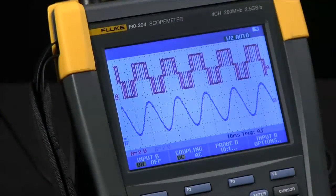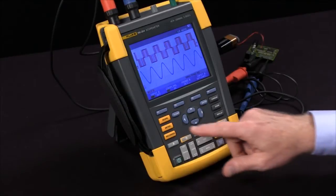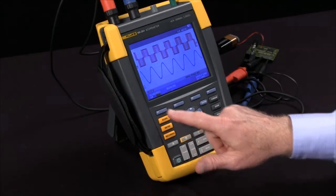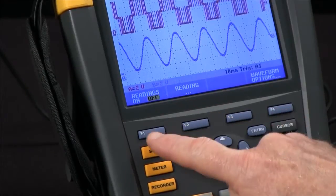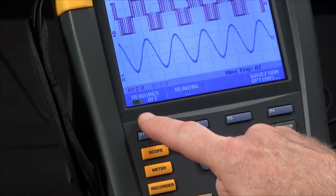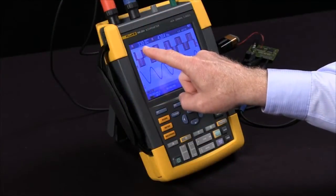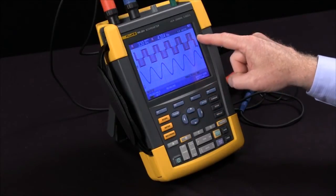The next thing I want to do is to make some measurements. If I hit the scope button I've got readings now for F1. They're turned off. F1 turns them on. I now see voltage and frequency for channel A.